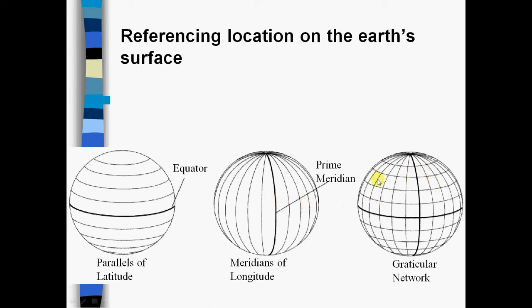These lines intersect at an infinite number of points. This shows the major intersections in what's called a graticular network. Using this strategy, it's possible to locate any position on the Earth's surface using just a latitude and a longitude.